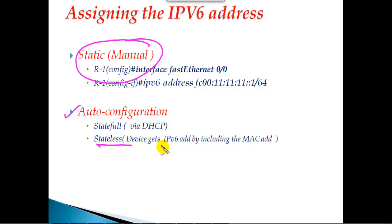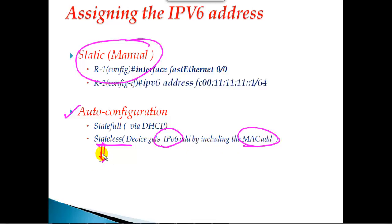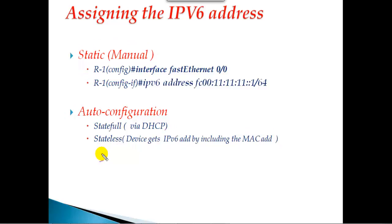Inside auto-configuration, there is one new method called stateless auto-configuration. In stateless auto-configuration, the device gets the IPv6 address automatically by including its own MAC address. We'll get into more detail about stateless auto-configuration in our next section. In this section we are going to mainly focus on static, that is manual assigning.